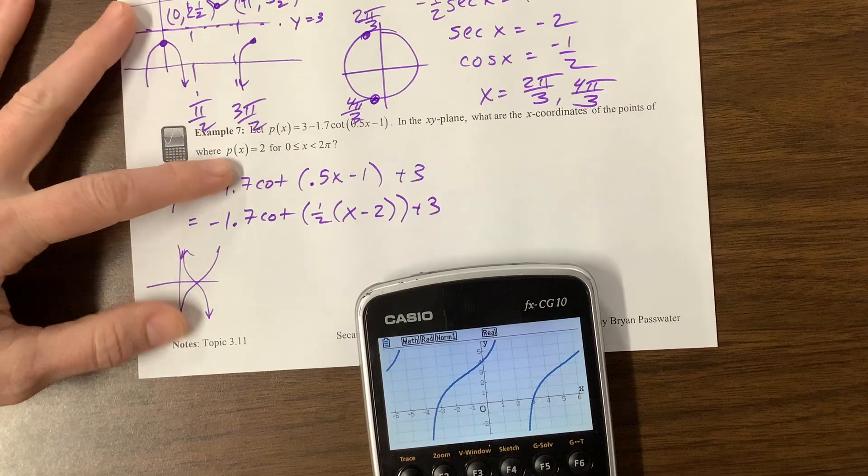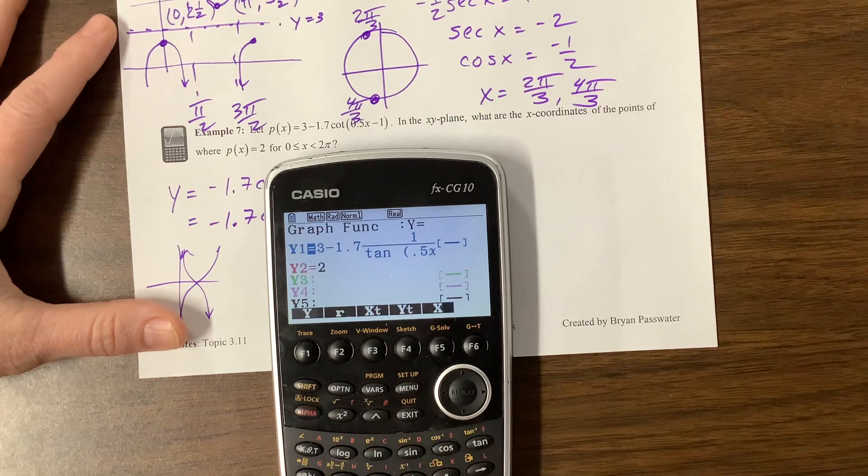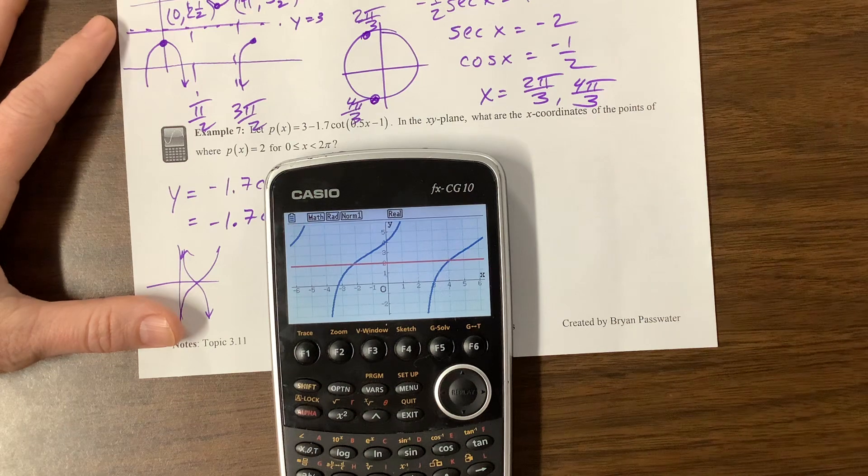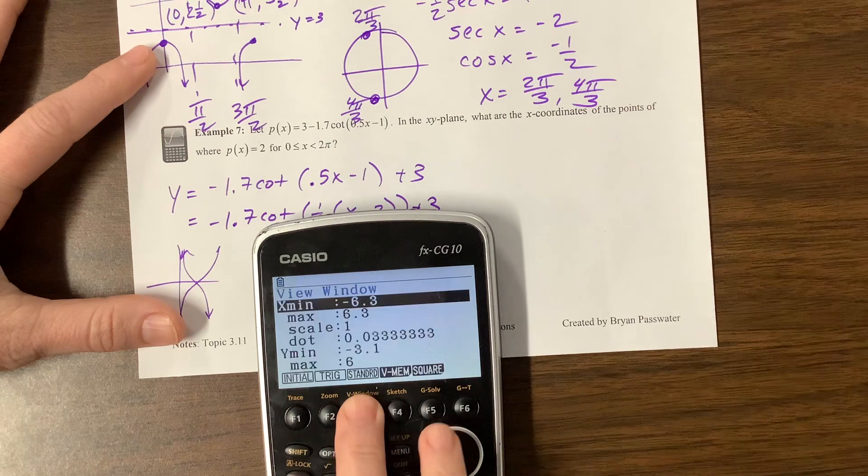So what did they say in the x-plan? What are the x-coordinates to the point where p of x equals 2? So I didn't read the whole problem, but I can set this equal to 2. The x-coordinates to the point from 0 to 2π. You know what? Let's go back and change this window again.